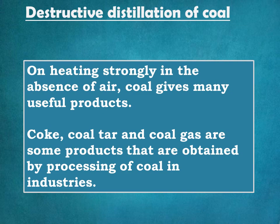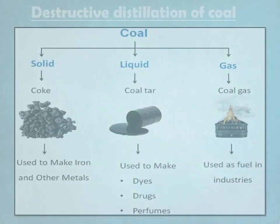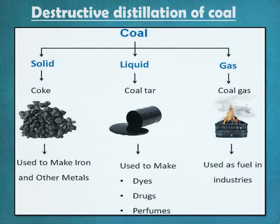Coke, coal tar, and coal gas are some products that are obtained by processing of coal in industries. The given outline shows the products obtained from coal by destructive distillation — namely coke, coal tar, and coal gas — along with some of their uses.